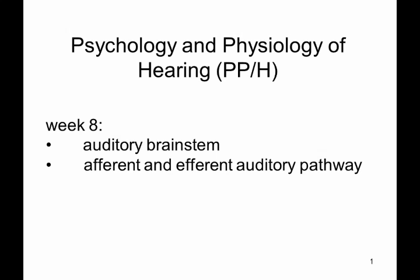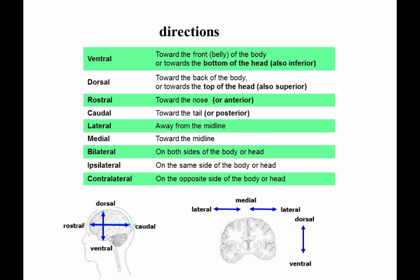Now we'll learn about the auditory brainstem and the afferent and efferent auditory pathway. First, a little bit of anatomy. All of the words describing anatomical structures have a certain code that's easy to understand once you know the language. This is a human brain, and the directions we use here are rostral-caudal and dorsal-ventral. Ventral means towards the belly; caudal means towards the tail.